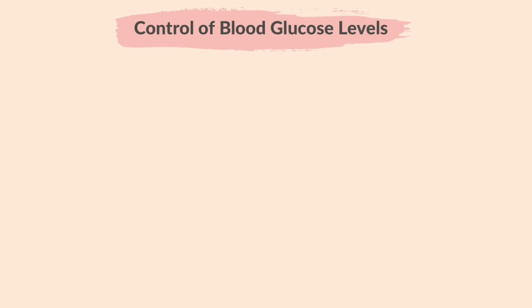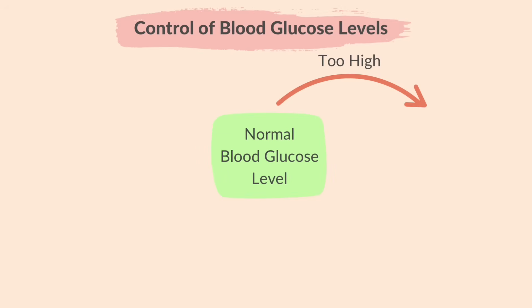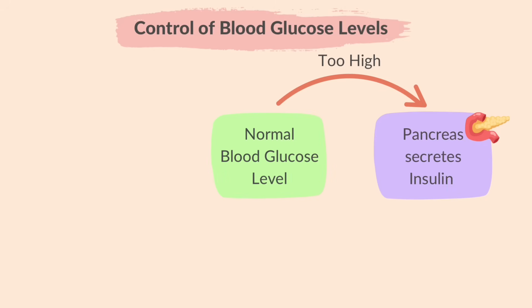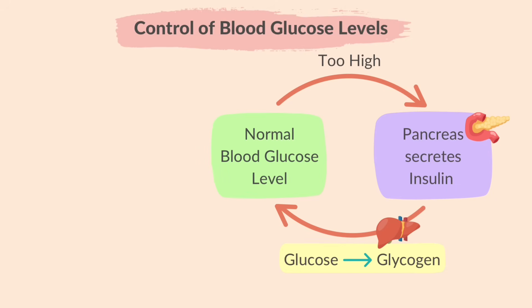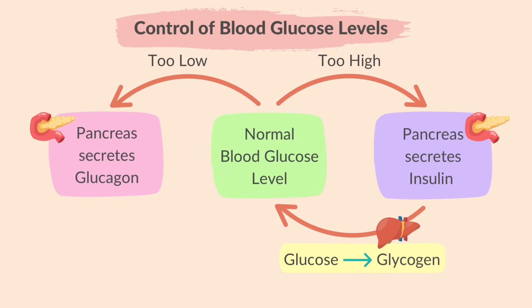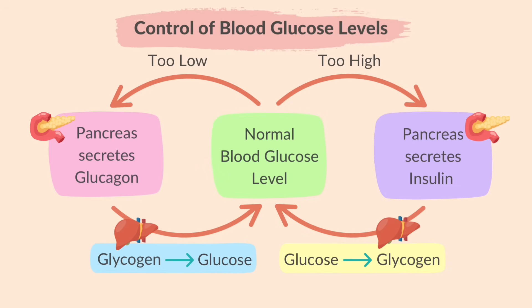Let's look at how blood glucose levels are controlled. If blood glucose levels get too high, the pancreas detects this and releases the hormone insulin. Insulin travels to the liver and stimulates it to remove excess glucose from the blood, converting it into glycogen — which is insoluble — and storing it, bringing glucose levels back down. When the body uses up glucose and blood glucose levels get low, the pancreas secretes a hormone called glucagon. Glucagon travels to the liver and stimulates it to break down stored glycogen into glucose and release it into the blood to bring glucose levels back up.